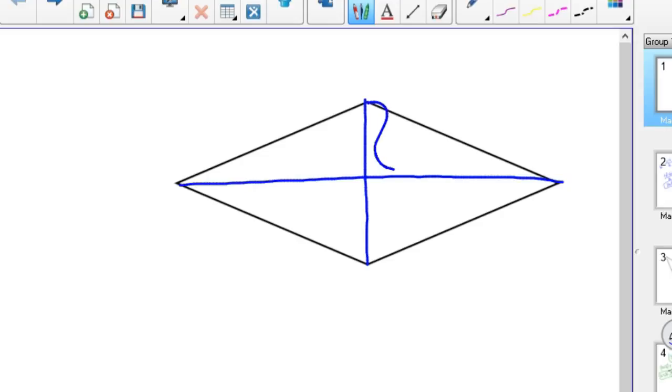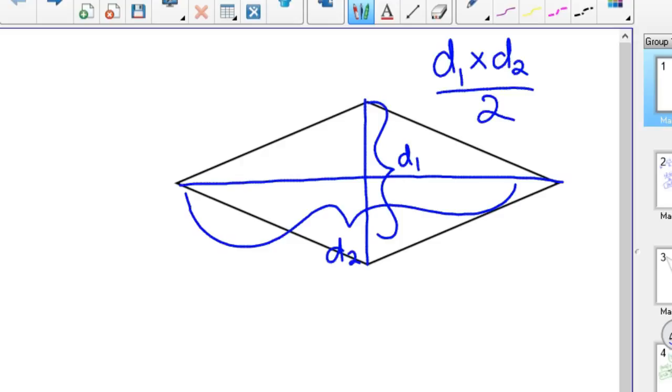So this we'll call D1 for diagonal 1, and this is D2 for diagonal 2. So for both kite and rhombus, you just take diagonal 1 times diagonal 2 divided by 2. That finds your area every time. With a rhombus and a kite, again I wouldn't recommend memorizing a whole bunch of formulas, because if you know the area of a triangle you've got this. But there it is, maybe to make things quicker for you. So hope this helps.